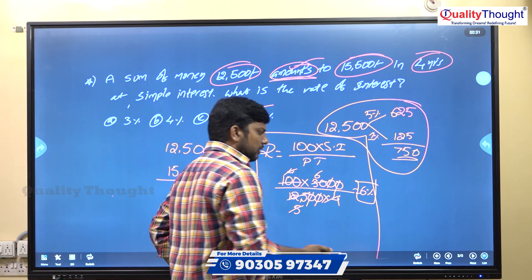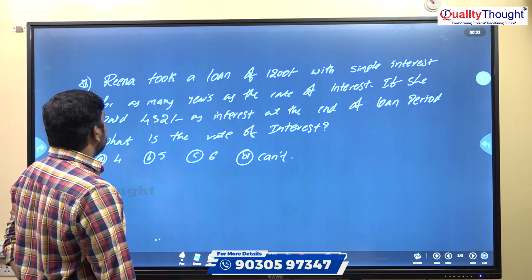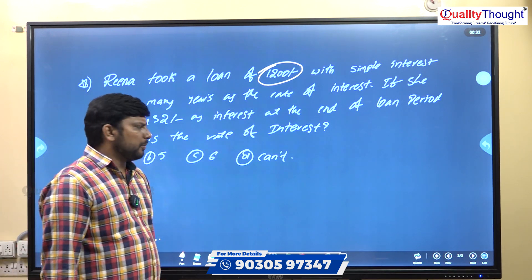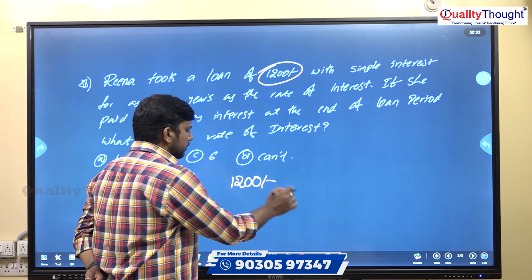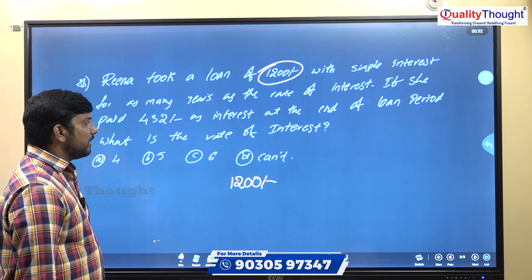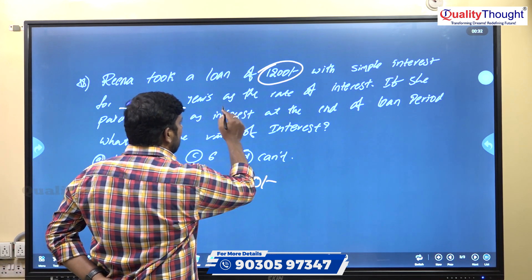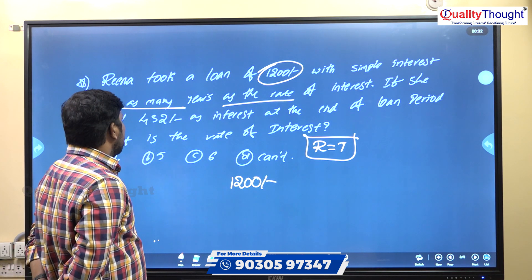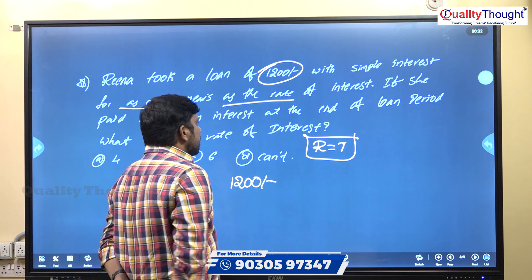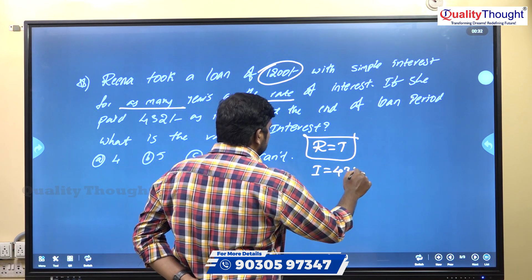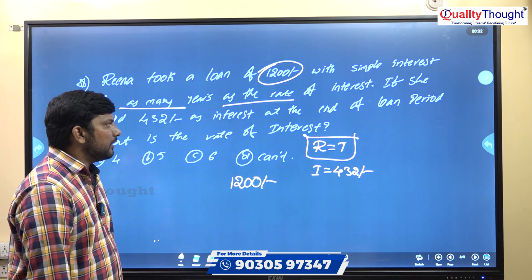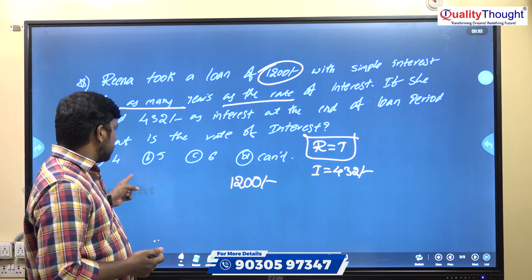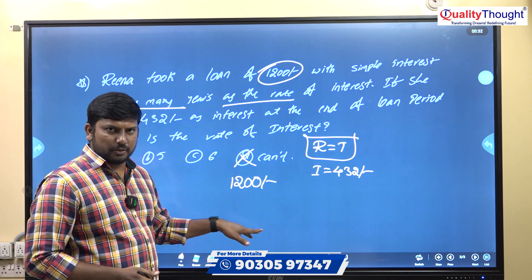Next question: Rina took a loan of 1,200 rupees with simple interest for as many years as the rate of interest. Meaning the rate of interest is equal to the time period.